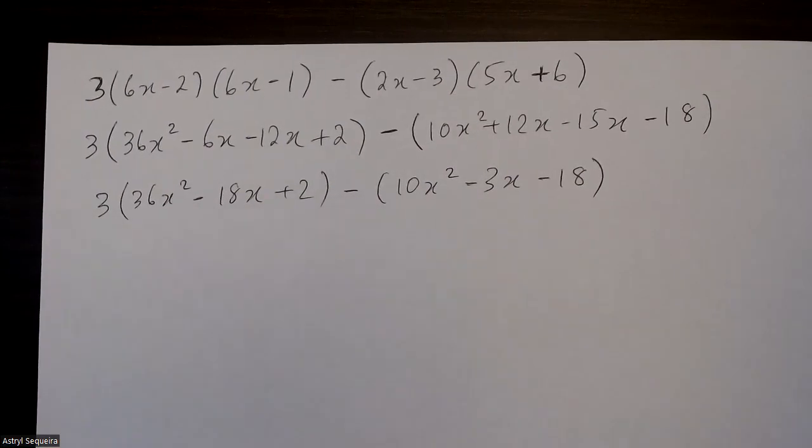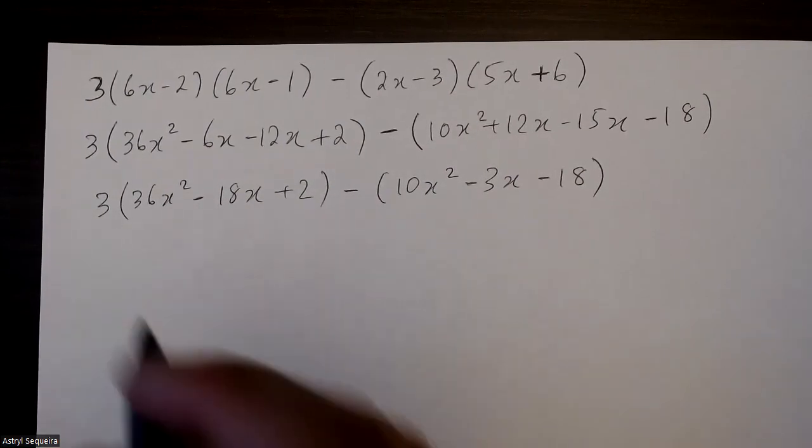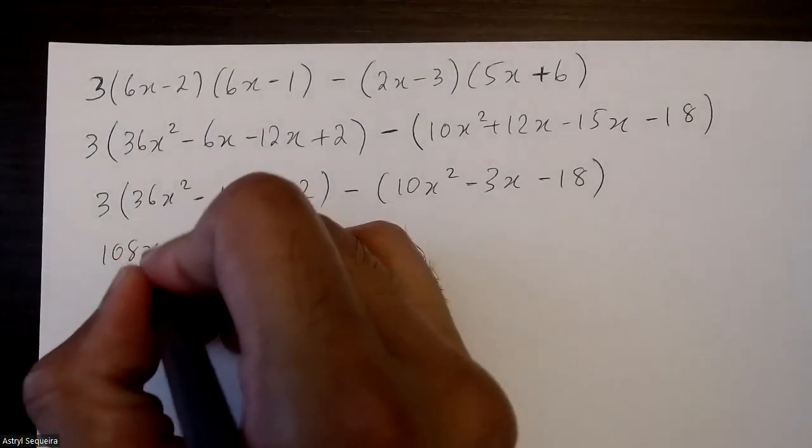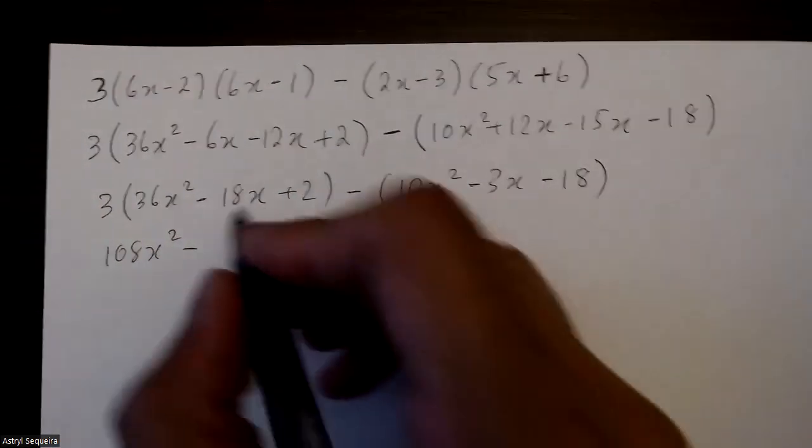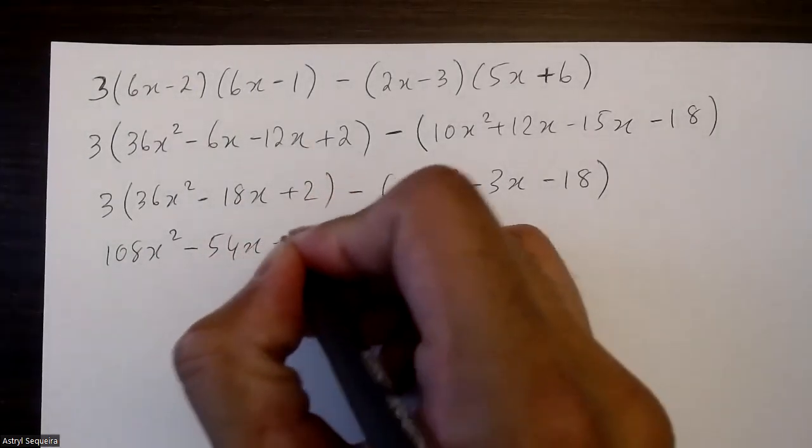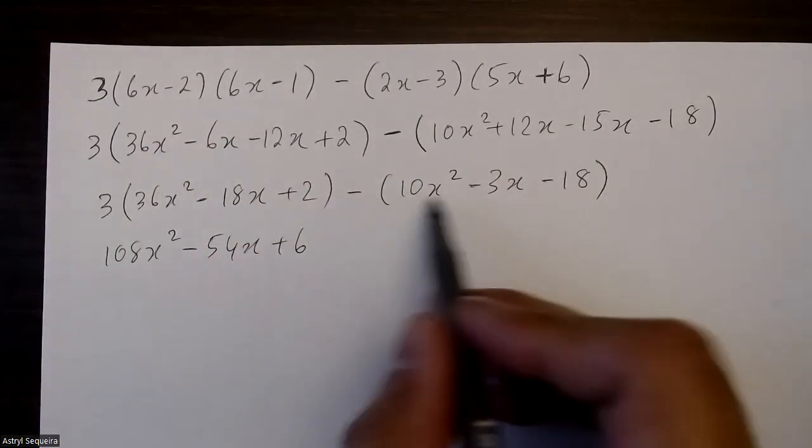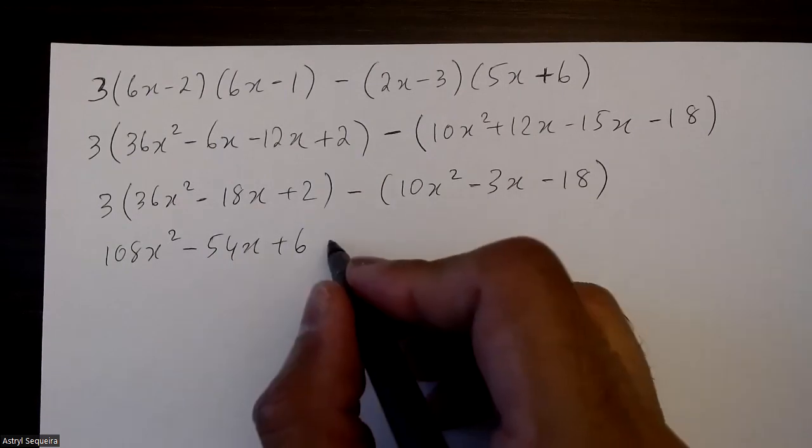Now I'll multiply the 3 into the bracket. So 3 times 36 is 108x squared, 18 times 3 is 54x plus 6. And then I'll distribute this negative into the bracket. It's going to become negative 10x squared plus 3x plus 18.